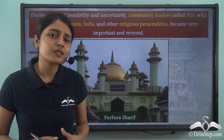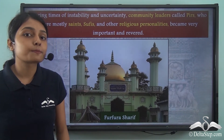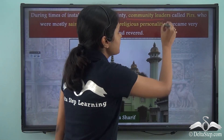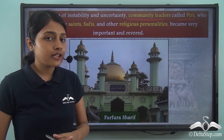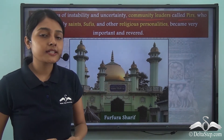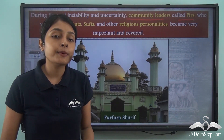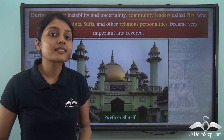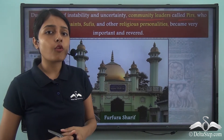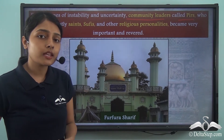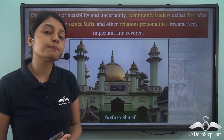Now who provided these people solace and peace and some sense of stability? This sense of stability and purpose was provided by community leaders who were known as the Peers. Now these Peers were mostly saints, Sufis, or other religious personalities. And in times of distress and uncertainty, these Peers extended help and moral support and comfort and solace and security to those distressed people. For this reason, the Peers were gaining importance in this region and became very revered because people almost worshipped them for the help and support they extended.